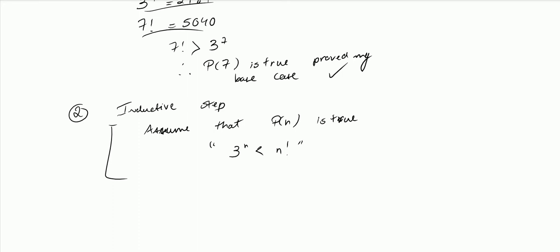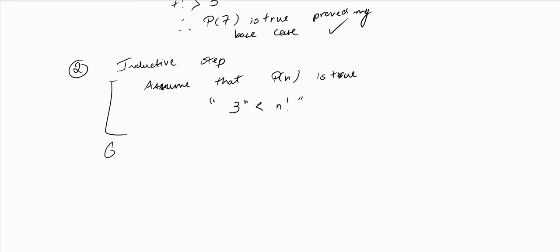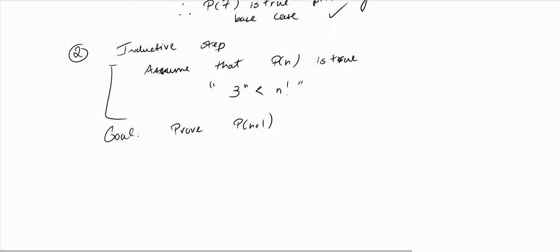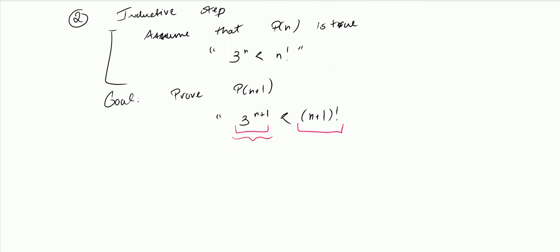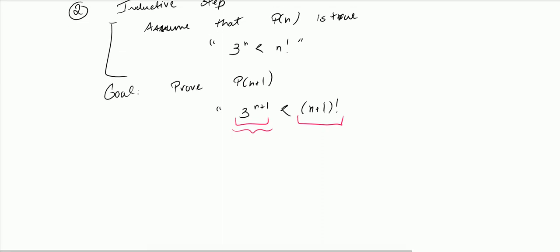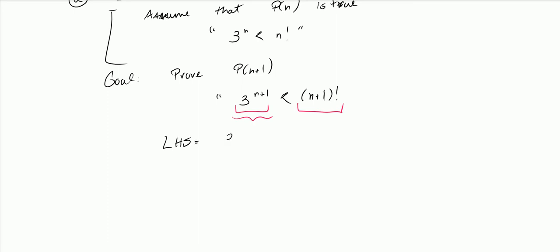That's my assumption. Now my goal is to prove P(n+1) — in other words, to prove that 3 to the n+1 is less than (n+1) factorial. You might be confused about where to start. I think it's easier to start with the left-hand side, and you'll see why in a bit, because you can rewrite it. So LHS equals 3 to the n+1.